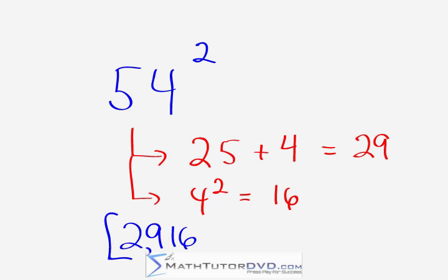Now keep in mind, just to make sure you know, this only works for digits in the 50, so 59 squared, 57 squared, 52 squared, etc. And the first thing you do is you take the number 25 and you add to it 4, which is the second digit here. We get 29, then we take the second digit, we square it. 4 times 4 is 16, and we put them together. 29, 16.